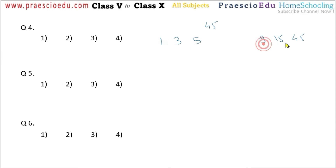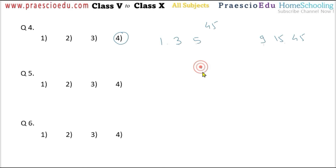Counting the factors of 45: 1, 2, 3, 4, 5, and 6 — so there are 6 factors. 6 is given in option number 4. Question number 5: which of the following numbers have only 2 factors? The main criteria for having only 2 factors means that number should be prime.